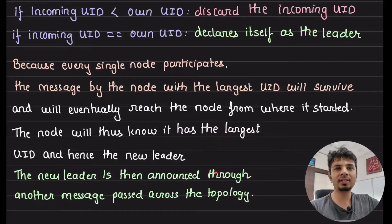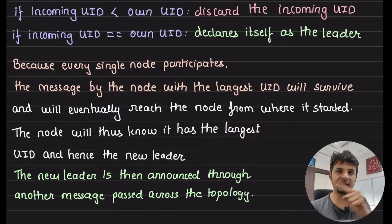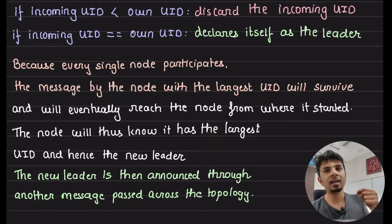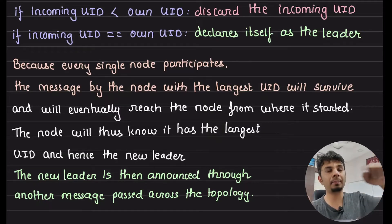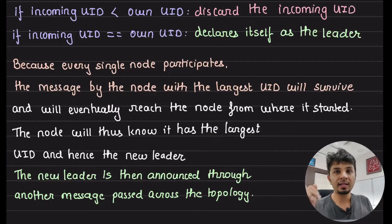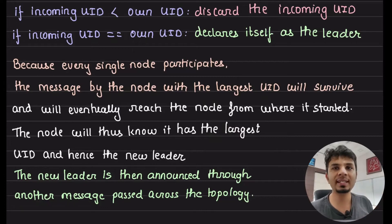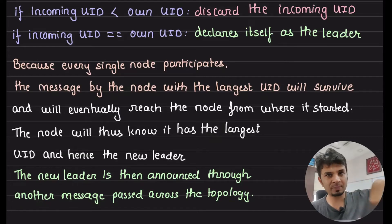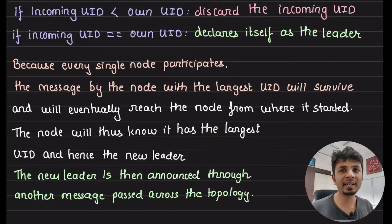This node then announces itself through another message relayed into the network: I am the new leader going forward. So what this algorithm does is simple: the new leader is the node whose UID is the largest. Every single node participates, creates a message, pitches itself, and sends it to its immediate neighbor. The neighbor relays it only if the incoming UID is larger than its own UID. The only message that survives will be from the node with the largest UID. This is the LCR leader election algorithm.